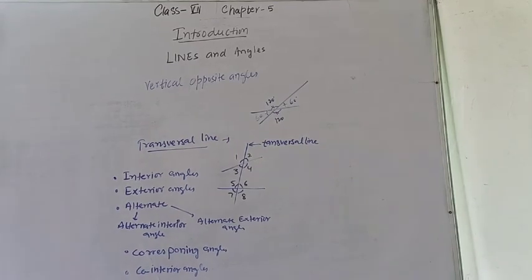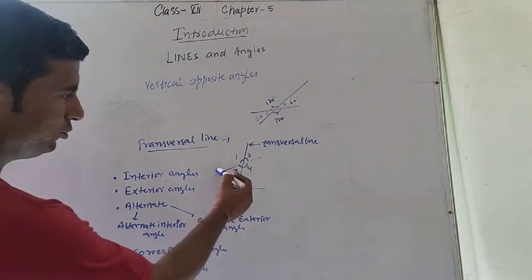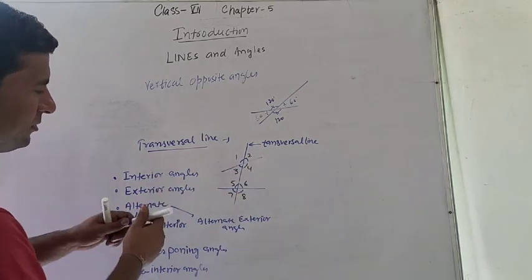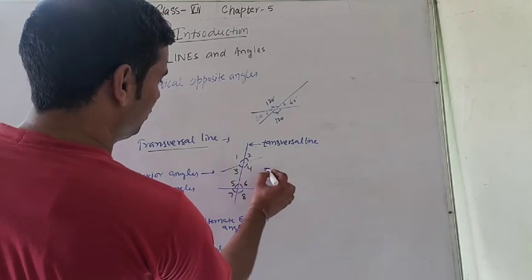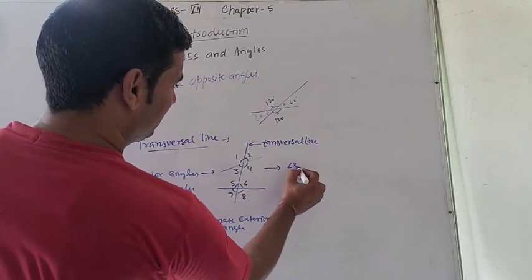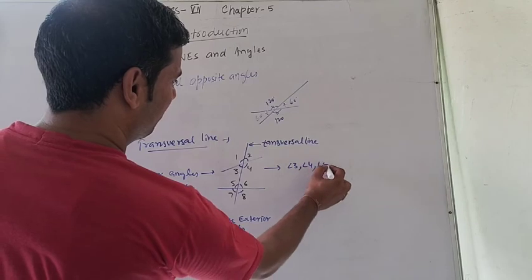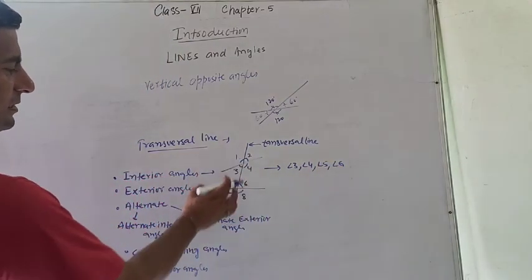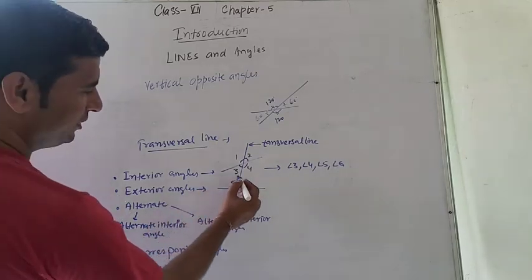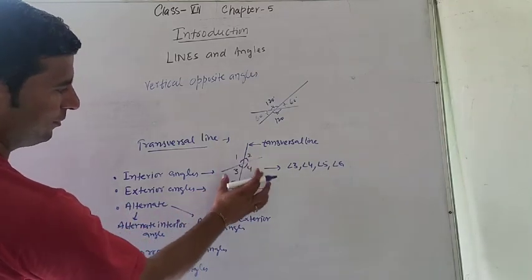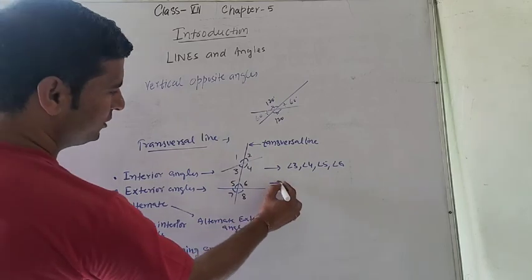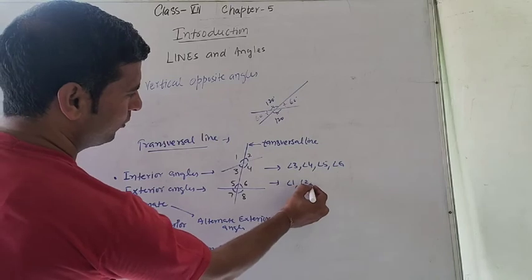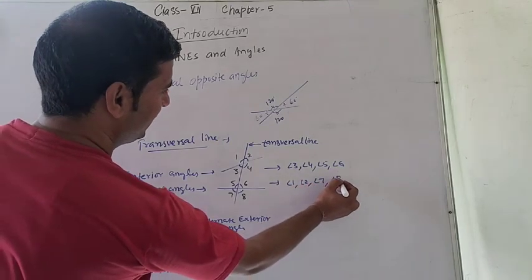What are the interior angles? The interior angles are angles 3, 4, 5, and 6 — these four angles in the middle region are the interior angles. The exterior angles are on the outer side — angles 1, 2, 7, and 8 are the exterior angles.